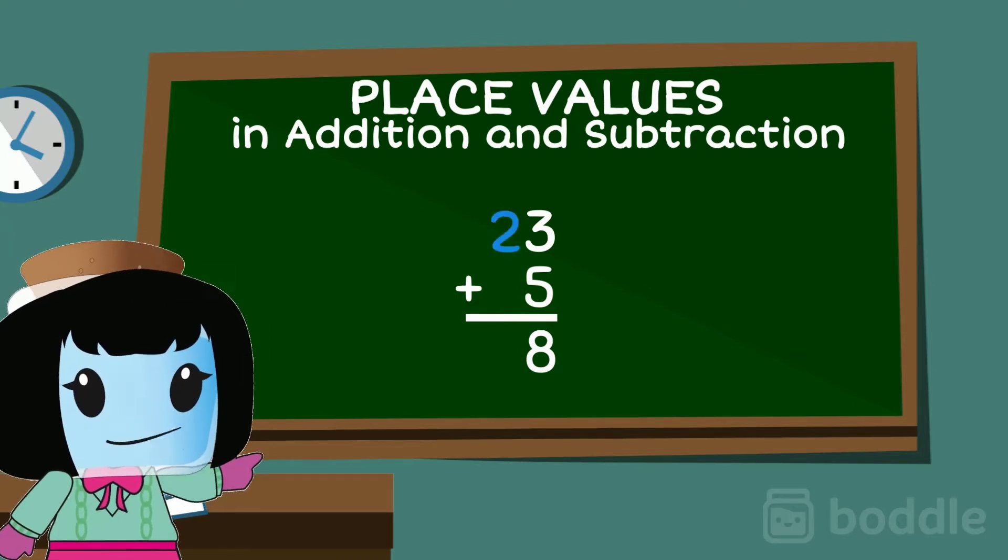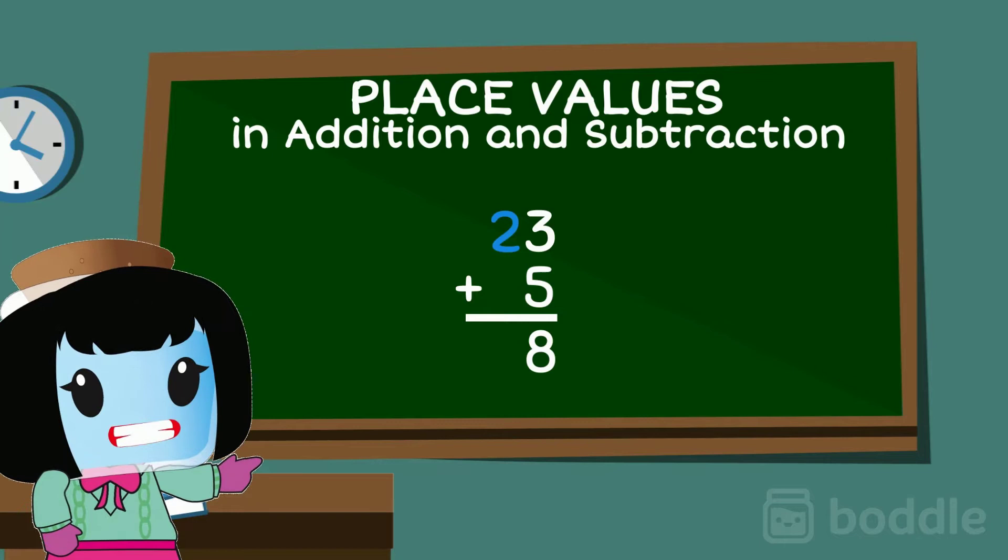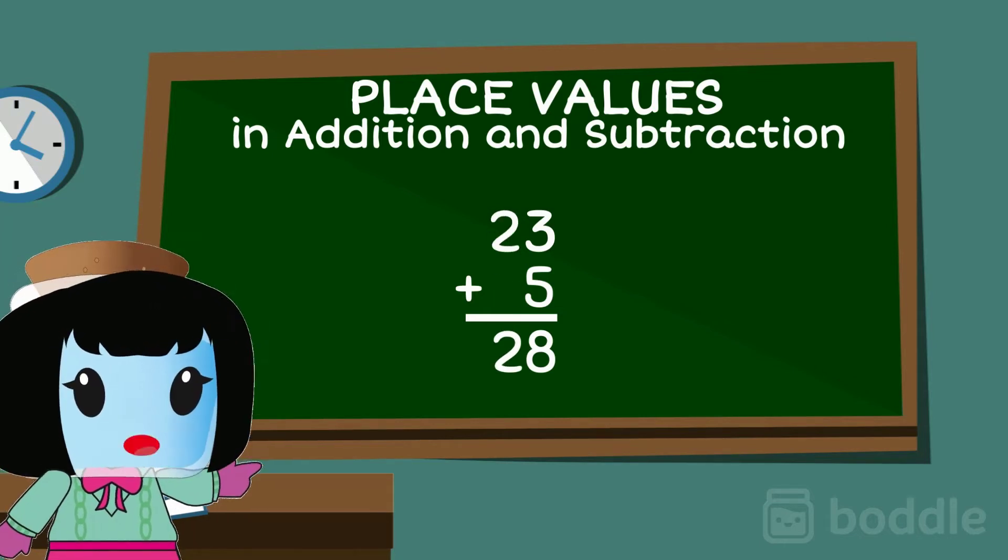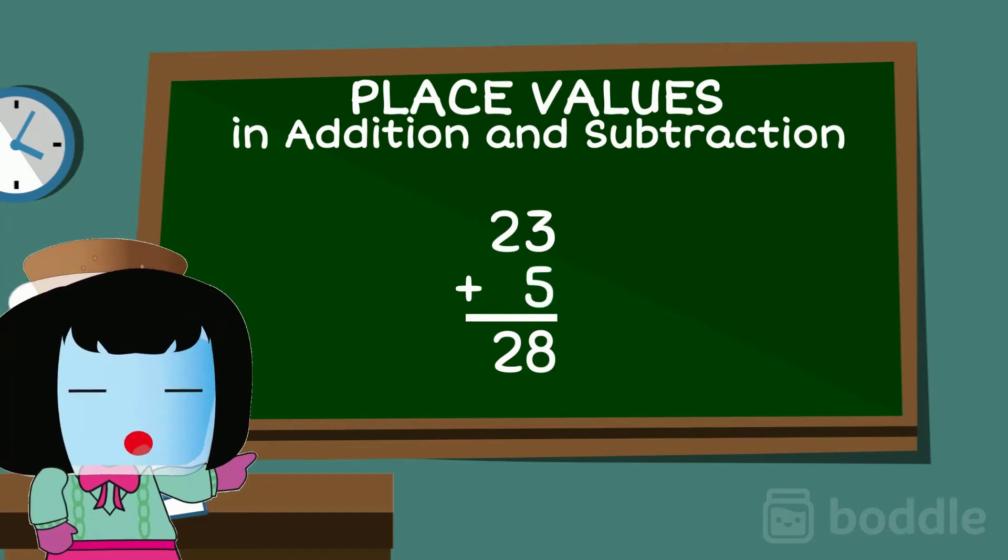Since 2 is alone in the tens column, simply bring it down beside the 8. This means 23 plus 5 equals 28.